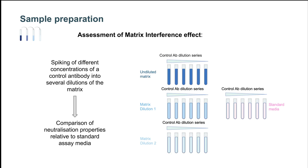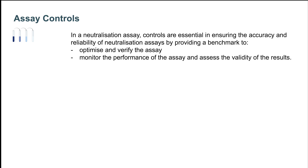Matrix interference studies are generally performed by spiking different concentrations of a control antibody into several dilutions of the matrix and comparing the neutralizing properties of such antibody relative to standard assay media. In addition to the test samples, in each experiment it is important to run a series of controls. The importance of controls in a neutralization assay cannot be underestimated, as they provide valuable information on assay reproducibility and assist with assay verification during assay development.